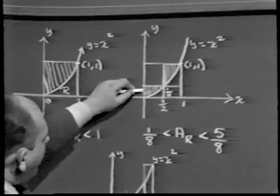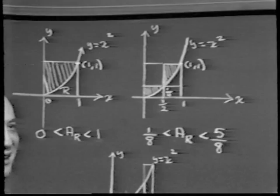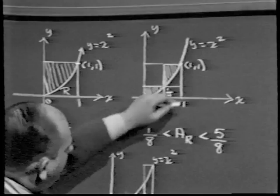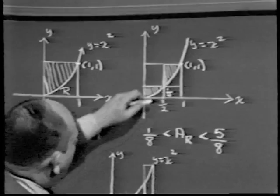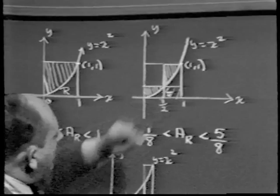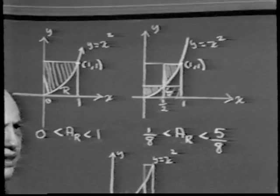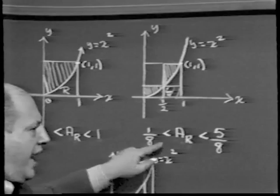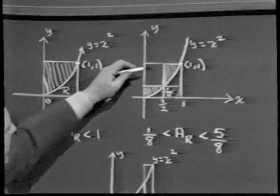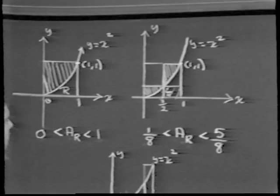The area of region R must be less than 5/8. On the other hand, the rectangle with base 1/2 and height 1/4 is inscribed in region R, so its area 1/8 must be less than the area of R. We are now certain the area of R is between 1/8 and 5/8. Notice that even though this is an approximation too large to be the right answer, it is closer than the single-rectangle approximation — we've chopped off part of the error.